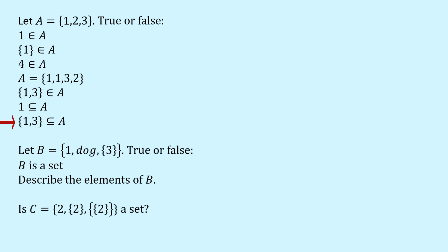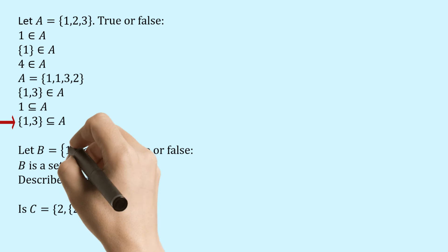The final statement that we've got involving A is this thing here. The set containing the numbers 1 and 3 is a subset of A. True or false? Well in this case this is a set and it contains only some of the elements of A and so it is a subset.